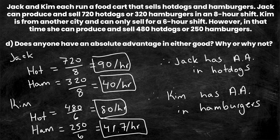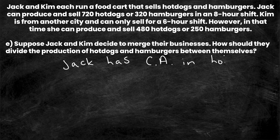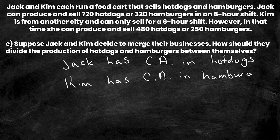Finally, question E: suppose Jack and Kim merge their businesses — how should they divide production? To maximize output, they should each produce the good in which they have a comparative advantage, just like specialization in trade. Jack has a comparative advantage in hot dogs, and Kim has a comparative advantage in hamburgers. Therefore, if they merge, Jack should make hot dogs and Kim should make hamburgers.